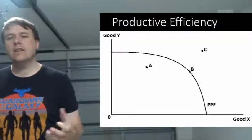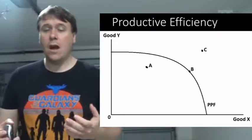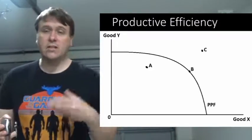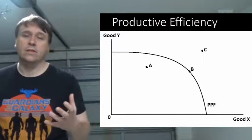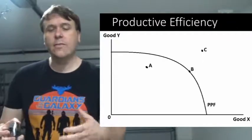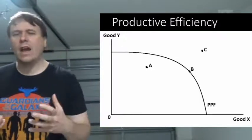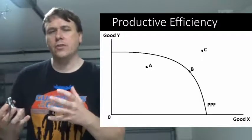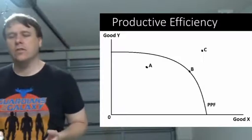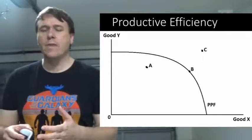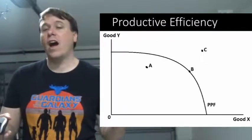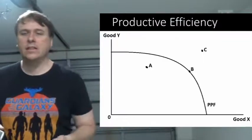So basically using this production possibility frontier describes what we mean by productive efficiency. So in a sense it's the best use of your resources in order to achieve as much output as you can. In this case it's just within two goods. In an economy it could be millions of goods. So you can't quite graph that. So it's just a very simple explanation.